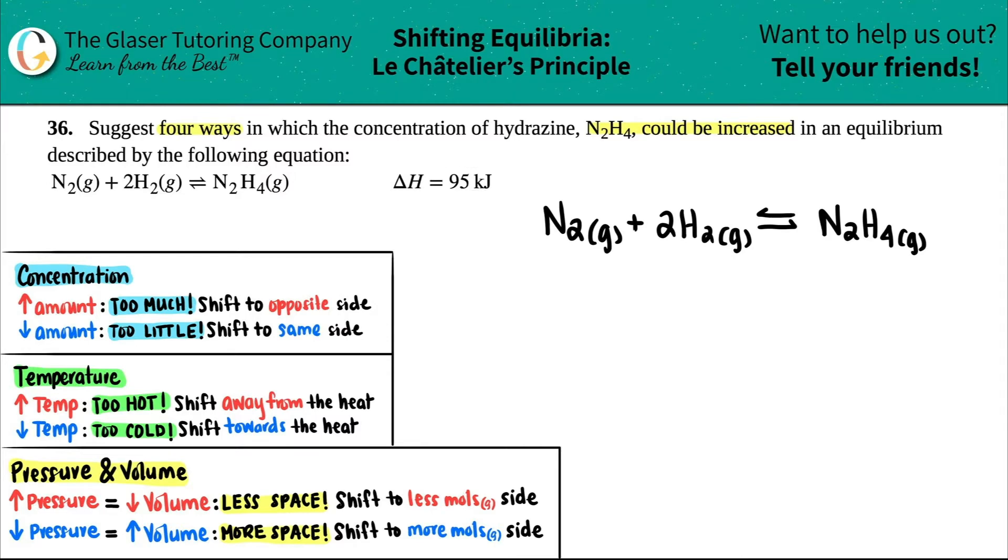Now, this delta H was a positive number. Do I really care that it's positive 95? No, I just care that it's positive. And remember, a positive delta H is an endothermic value.